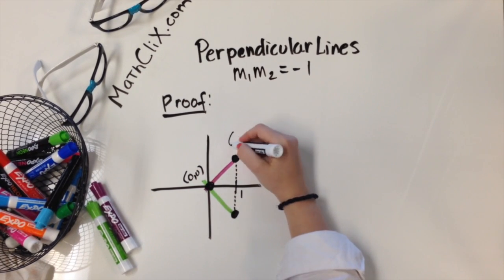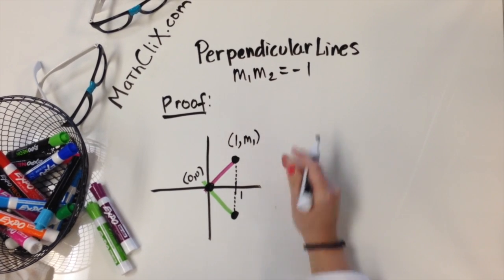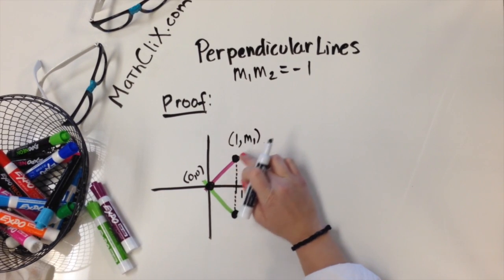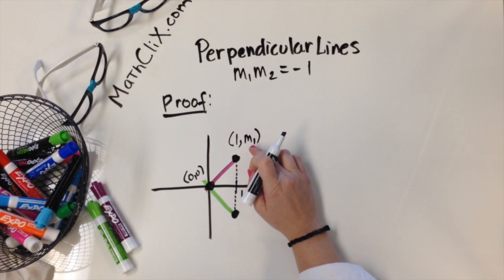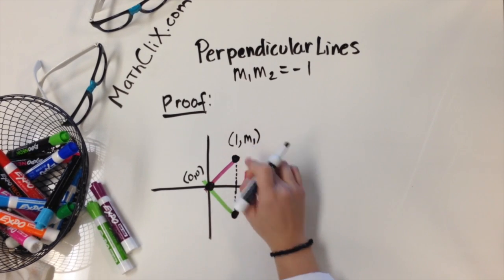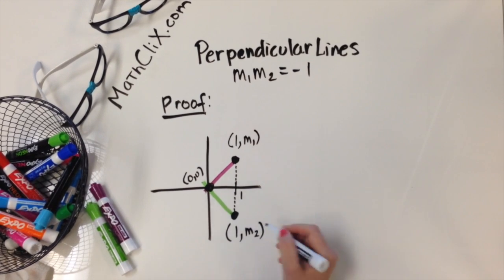We're going to label this point has an x-coordinate of 1, and we're actually going to label this y-coordinate as m1, since m1 would be the slope of the purple line and it's the change in y over change in x, which if the change in x is just 1, then it would just be m1. Down here would be (1, m2).